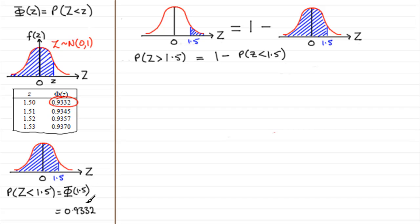And we've got that down here, 0.9332. So we've got 1 minus 0.9332, and that comes to 0.0668. So that's how you can work out the probability of being more than a value when that value is to the right of 0.